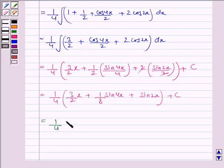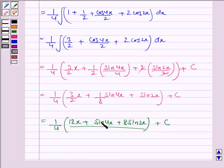Now this equals 1/4 times—taking LCM, which would be 8—we have (12x plus sin4x plus 8sin2x)/8 plus C.